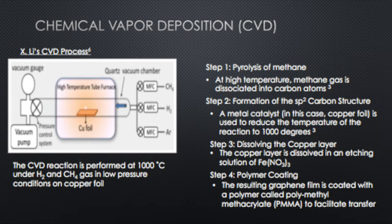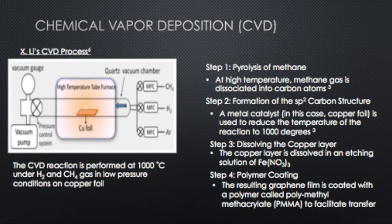Step three: once the graphene film is deposited onto the copper substrate, the copper layer needs to be removed or separated from the graphene film. They use an etching solution of iron nitrate to dissolve the copper and separate it from the graphene film. Finally, before the graphene is transferred or analyzed using any analytical technique, they apply a polymer coating to protect it — in this case, polymethylmethacrylate, or PMMA — which facilitates the transfer.